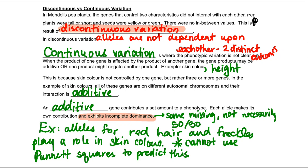So we talked about the alleles for red hair as well as freckles and they play a role in skin color, and they cannot use Punnett squares to predict this. So this is like another last key important thing. You can't really use Punnett squares to predict this because there's no probabilistic prediction for multivariant traits.